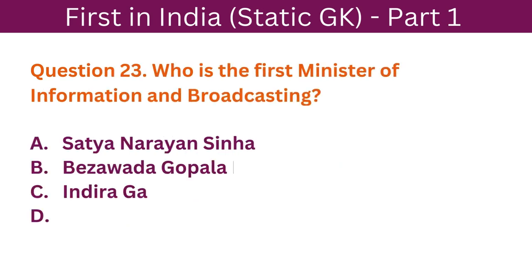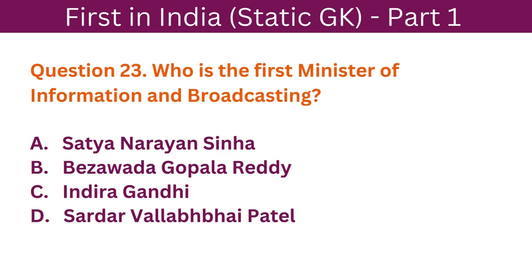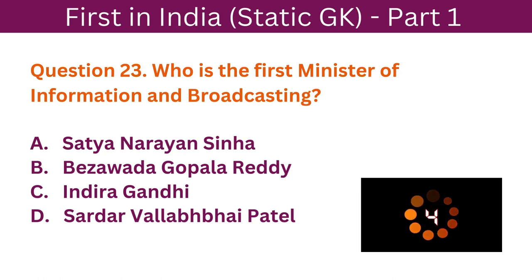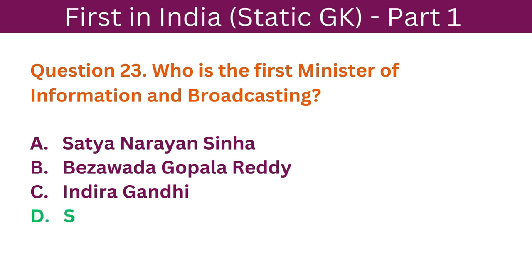Question 23: Who is the first Minister of Information and Broadcasting? A. Satyanarayana Sinha. B. Bezwada Gopala Reddy. C. Indira Gandhi. D. Sardar Vallabhbhai Patel. The correct answer is D. Sardar Vallabhbhai Patel.